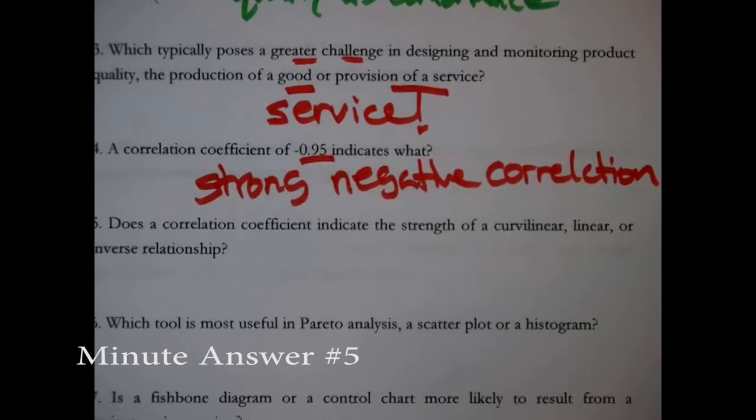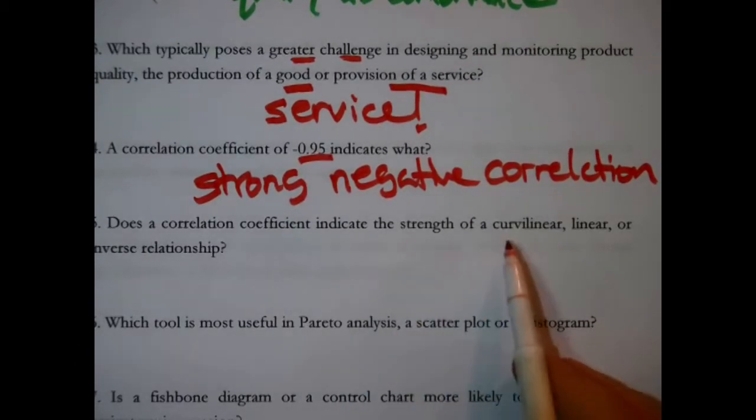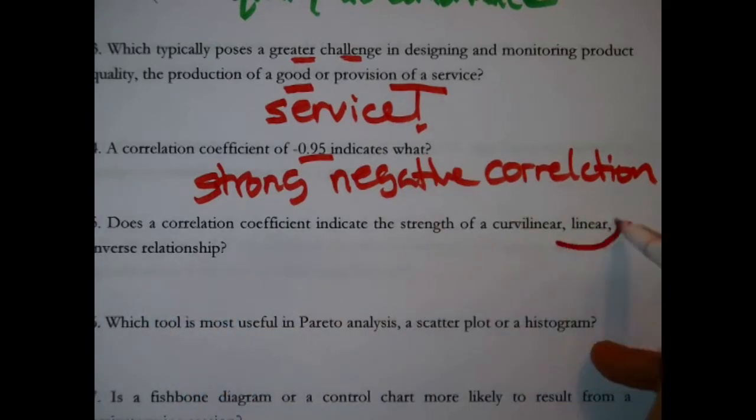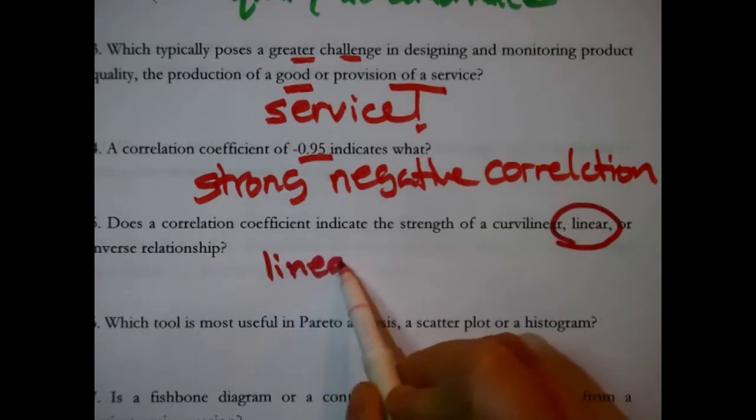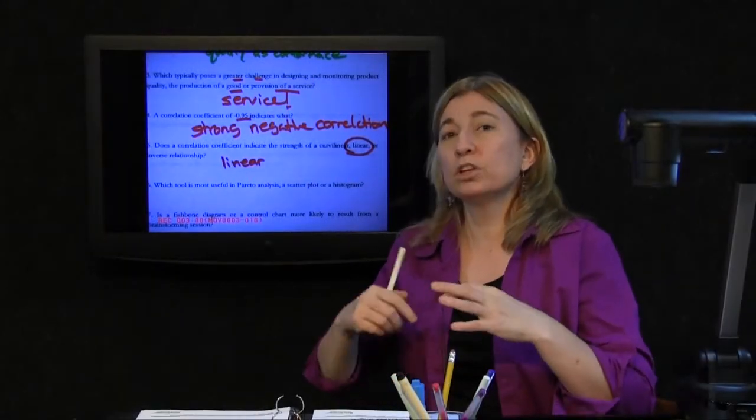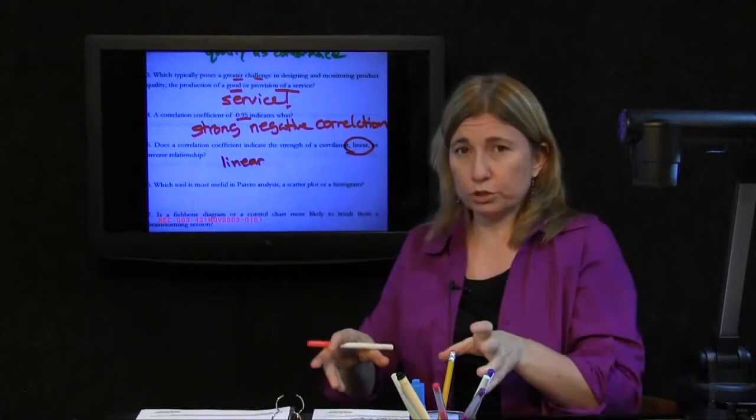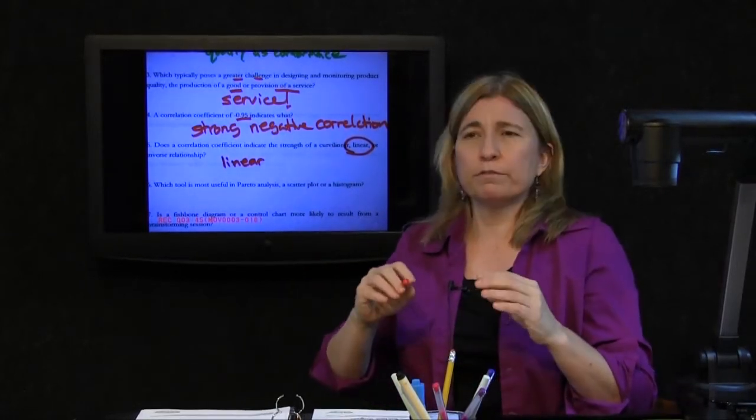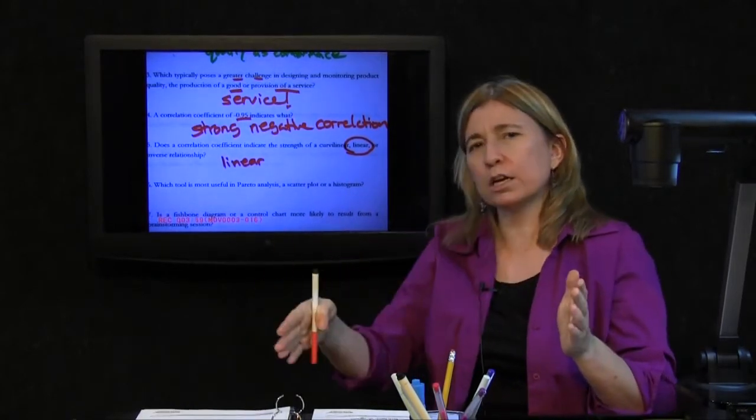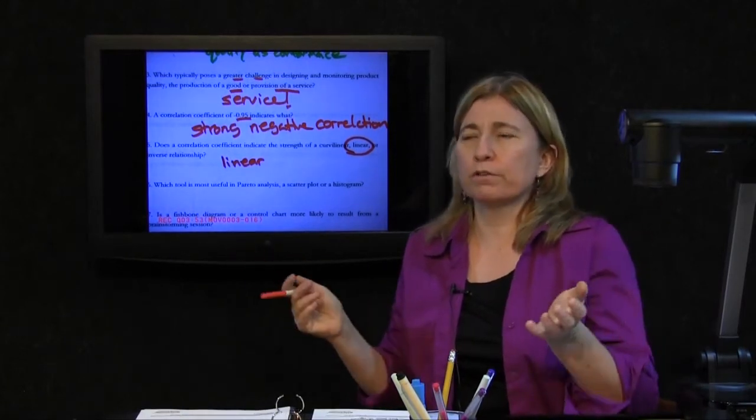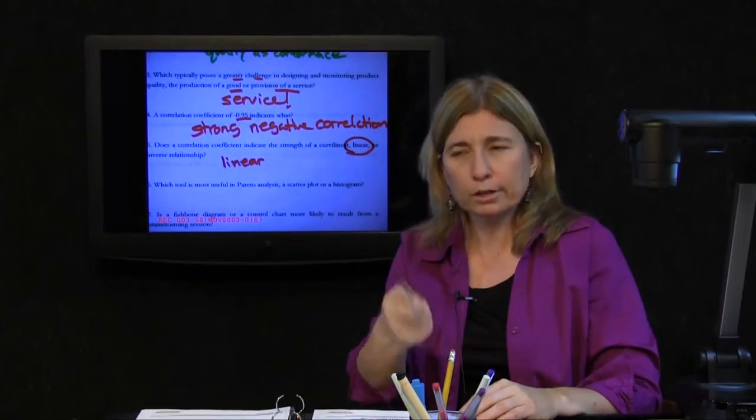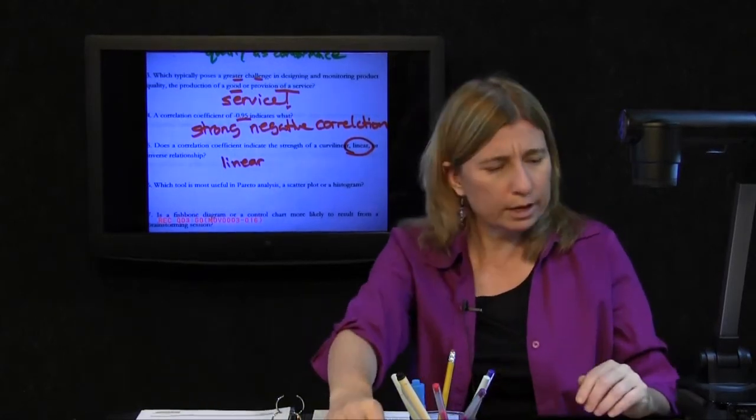Does a correlation coefficient indicate the strength of a curvilinear, a linear, or an inverse relationship? Linear. That is something we need to remember about correlation coefficients. They are measure of the linear relationship between two sets of data. There may be a very powerful and interesting curvilinear relationship, and your correlation coefficient would totally miss that fact. That's not what it's designed to express or to look for. Linear relationship. Next question.